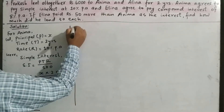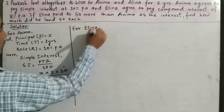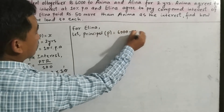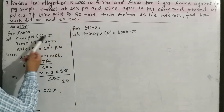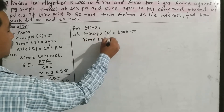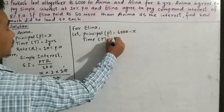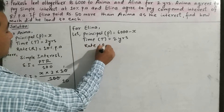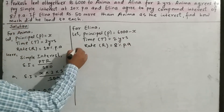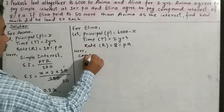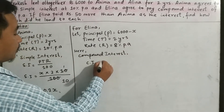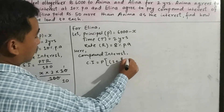Now for Elena, let principal P equal to 6000 minus x. Since total 6000 is given and x is given to Anima, the remaining 6000 minus x is given to Elena. Time T equals 2 years, rate R equals 8% per annum compound interest. So compound interest CI equals P times (1 plus R divided by 100) to the power T, minus 1.